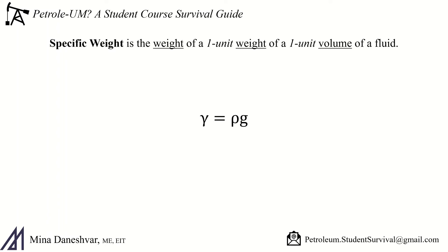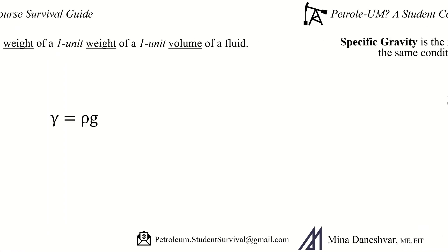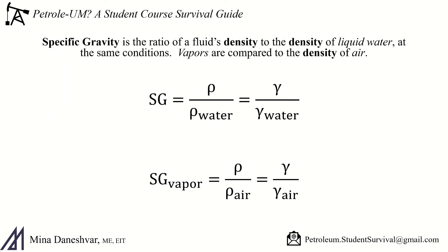Another density-related term, often denoted by small gamma, is specific weight. This is the weight of one unit volume of fluid. It's particularly helpful when using field units to convert between pounds mass and pounds force.